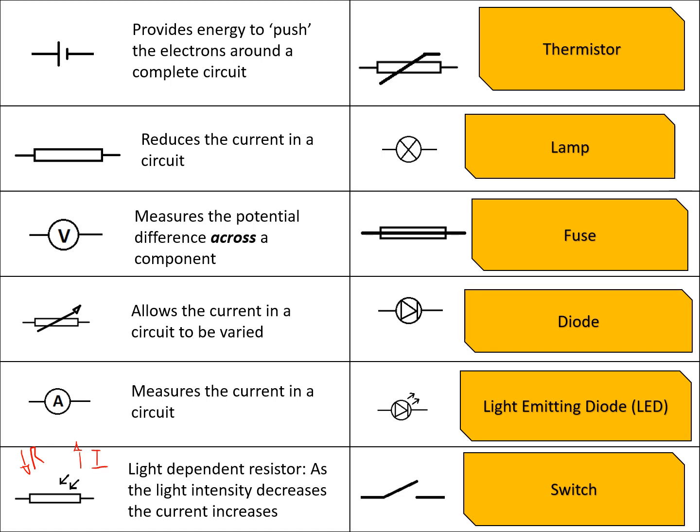A thermistor changes its resistance as the temperature changes. So as the temperature increases, the resistance decreases, therefore if the resistance has gone down, the current will go up.